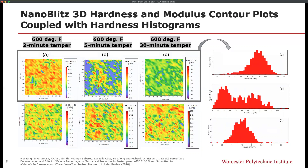Here we see contour plots of hardness and modulus for the 2-minute, 5-minute, and 30-minute tempers — A, B, and C respectively — and the resultant hardness histograms affiliated with each condition. These contour plots were produced using the NanoBlitz 3D method, affiliated with KLA Instruments or Nanomechanics Incorporated's iMicroPro and iNanoSystems. As you can see, the hardness decreases as a function of austempering hold time, which is indicative of the dissolution and reformation of bainite as the austempering hold time increases.